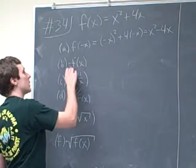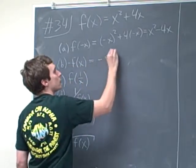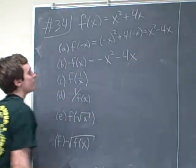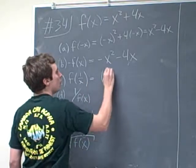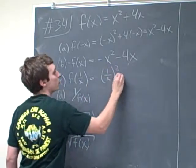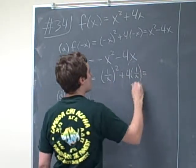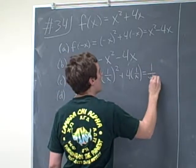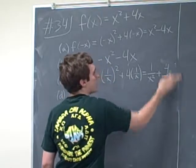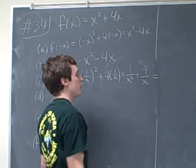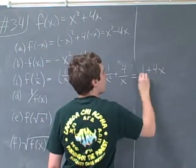Over here it just says we take our entire function and make everything negative. So that will give us negative x squared minus 4x. Here we plug in 1 over x and we'll get 1 over x quantity squared plus 4 times 1 over x, which is the same thing as 1 over x squared plus 4 over x. And if you wanted to simplify it even further, you can find a common denominator here of x squared and you get 1 plus 4x over x squared.